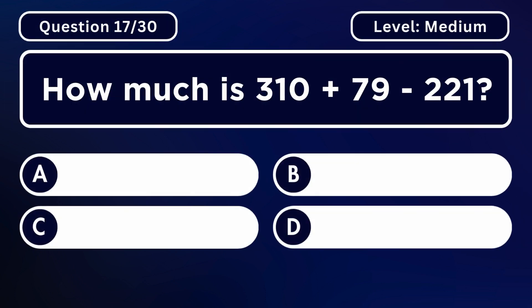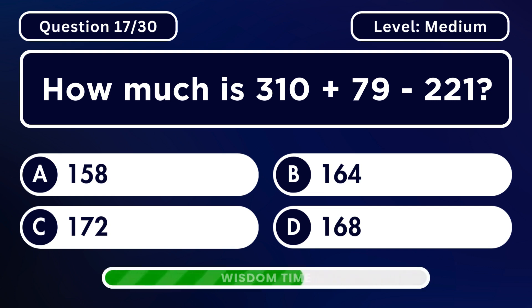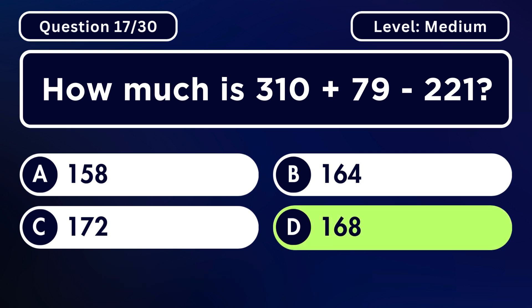How much is 310 plus 79 minus 221? Answer D. 168.